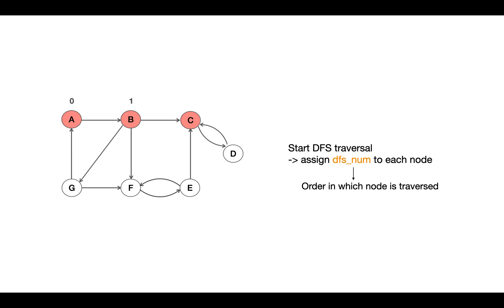Now it has three child nodes. Going to C first, assign 2, then D assign 3 to it. D doesn't have any children node, so we come to C. C doesn't have any other child node either, so we come back to B.